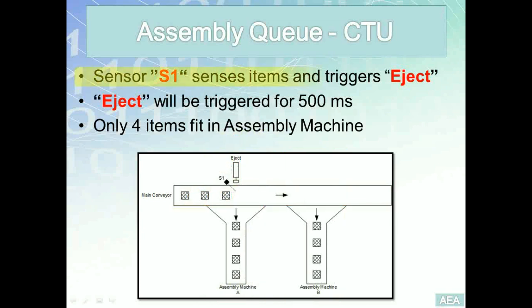Sensor S1 is an infrared normally-open sensor. When it senses an item, it will close and read one into the PLC memory. Once it senses an element, it will trigger an eject solenoid.